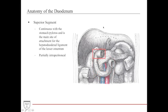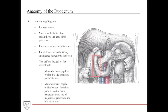The superior segment continues with the stomach and pylorus and is the main site of attachment for the hepatoduodenal ligament of the lesser omentum. This portion is considered partially intraperitoneal. The descending segment is the most significant — it is retroperitoneal, in very close proximity to the pancreas, and is the site of entranceway into the biliary tree. It is located anterior to the kidney and posterior to the colon.